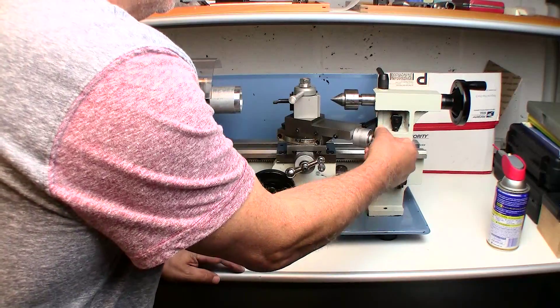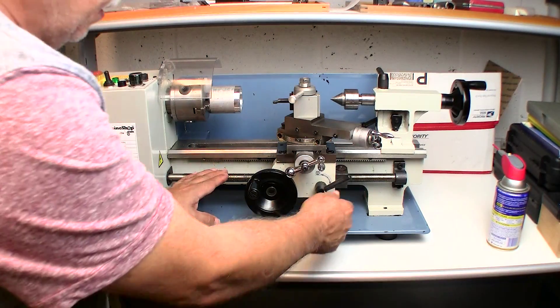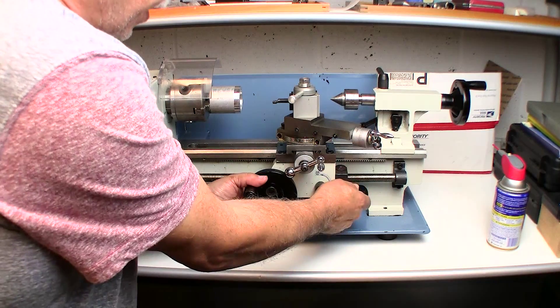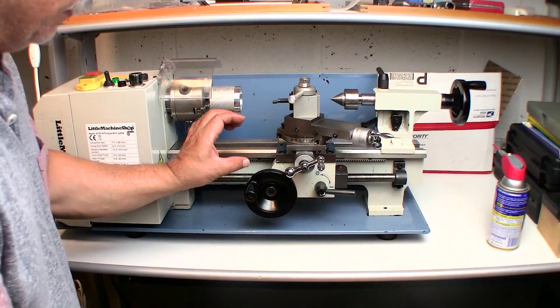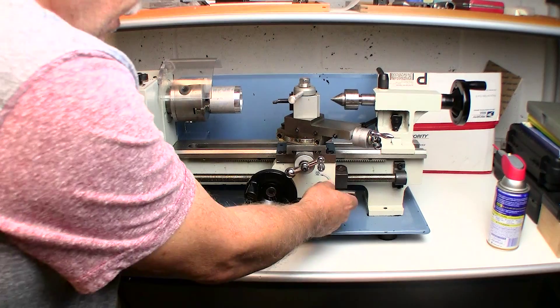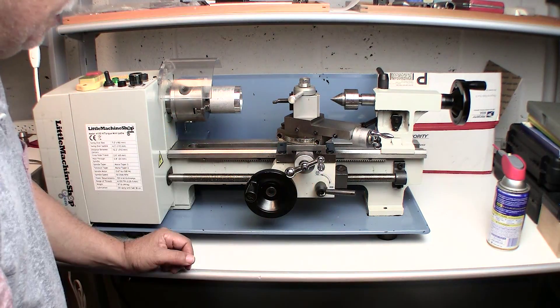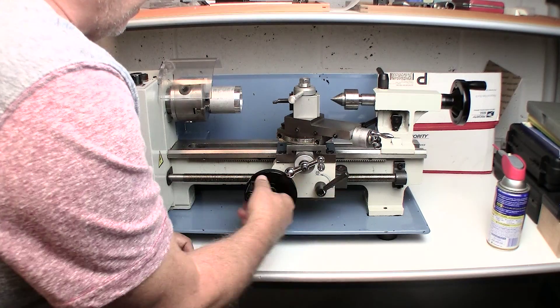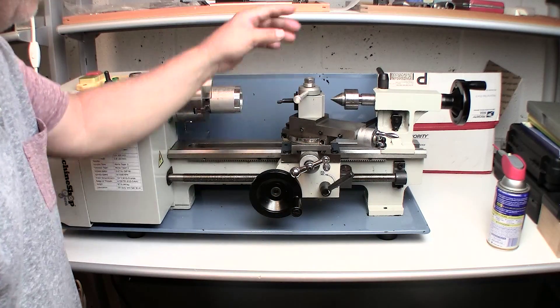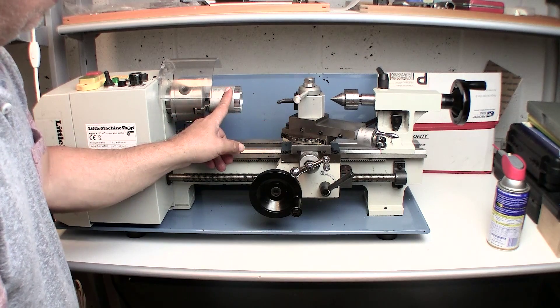The lathe allows you to do live feed by simply bringing the locking lever down, which operates the split nut around the lead screw. This of course allows you to also cut threads on the lathe. At this point I have the unit set up for boring. I have a quick change tool, an accessory you can buy for it, and I have the boring bar set up with an aluminum cylinder here.